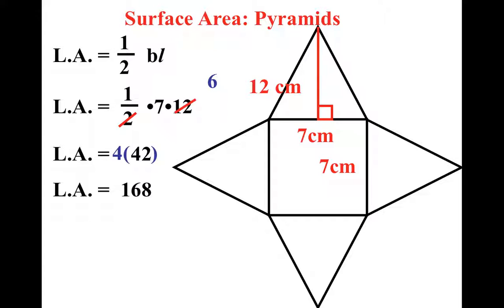And of course, the base, which is the rectangle, or the square, in this case, is the easy one. It's 49. Now if I add those together, I get my final answer, 217 centimeters squared.